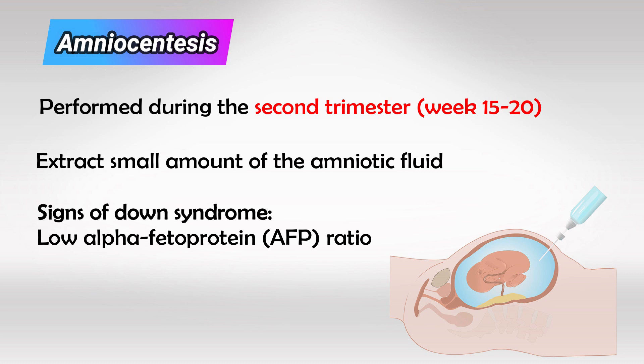Keep in mind that the latter two tests — chorionic villus sampling and amniocentesis — are invasive, but their accuracy can be as high as 100%. However, they both carry a risk of miscarriage in about 1% of cases. So they are very accurate, but at the same time somewhat risky.